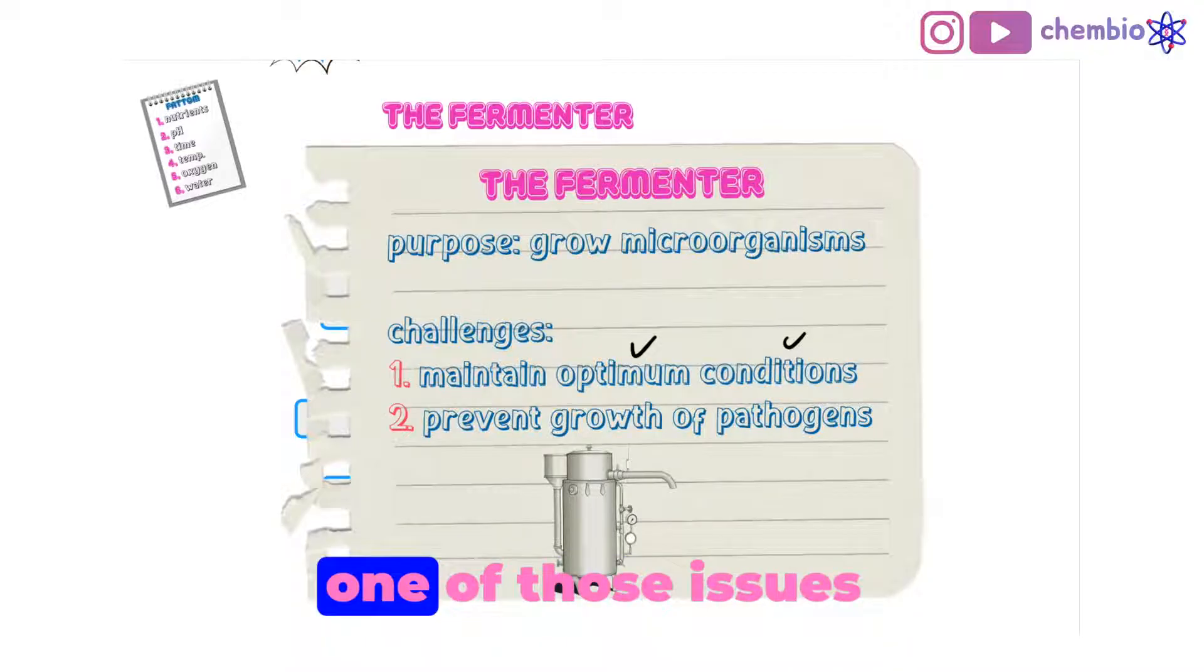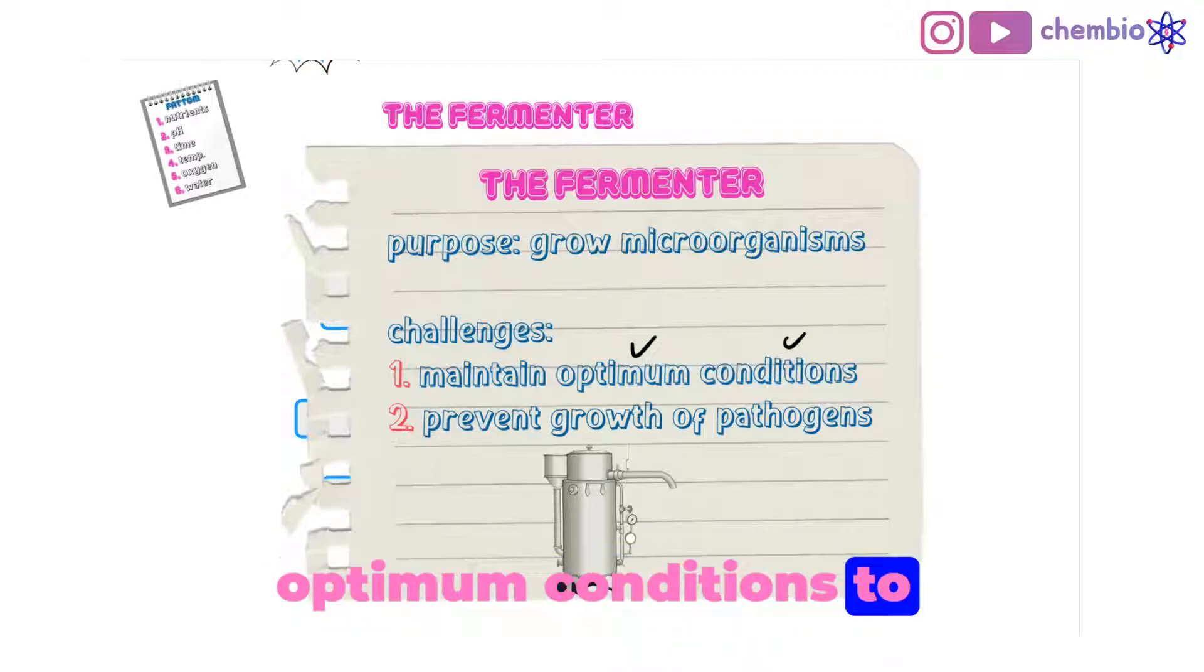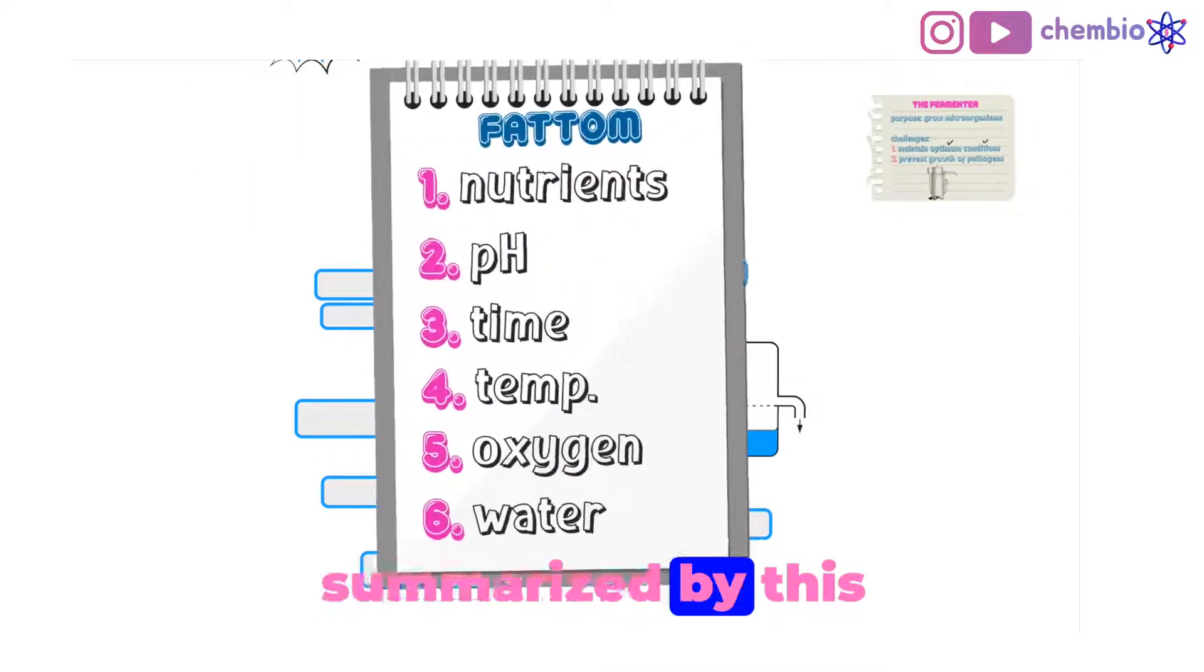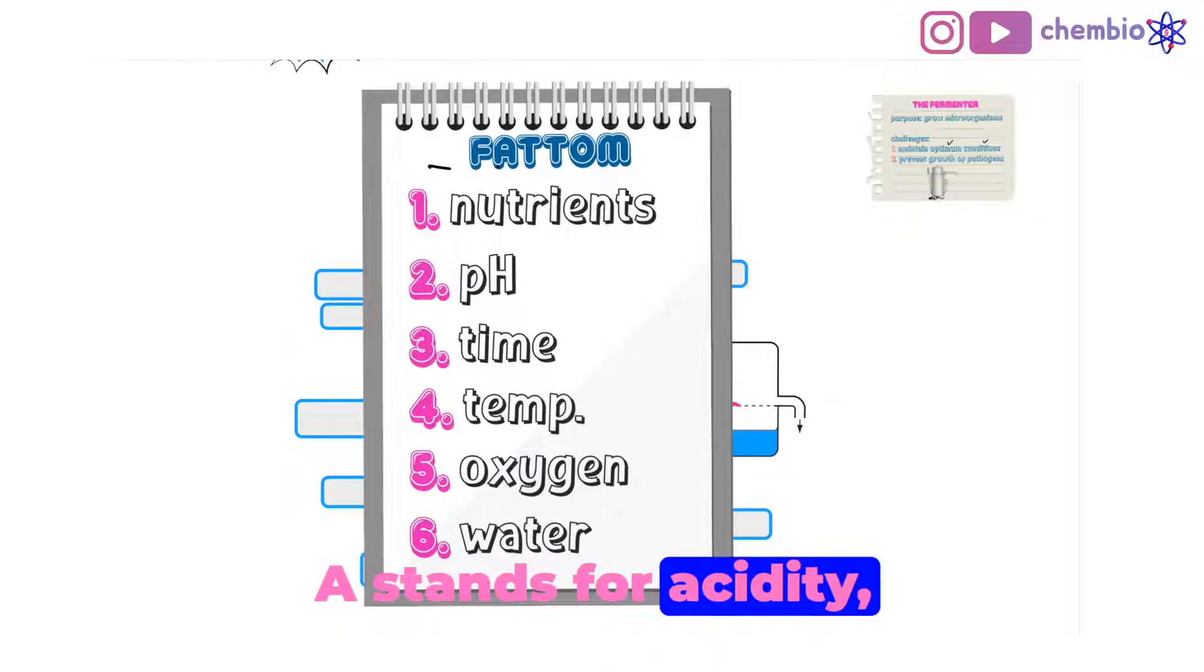Now, let's tackle each one of those issues separately. Let's start with the optimum conditions to grow microorganisms. These could be summarized by this mnemonic called FATUM. F stands for food, A stands for acidity or pH.